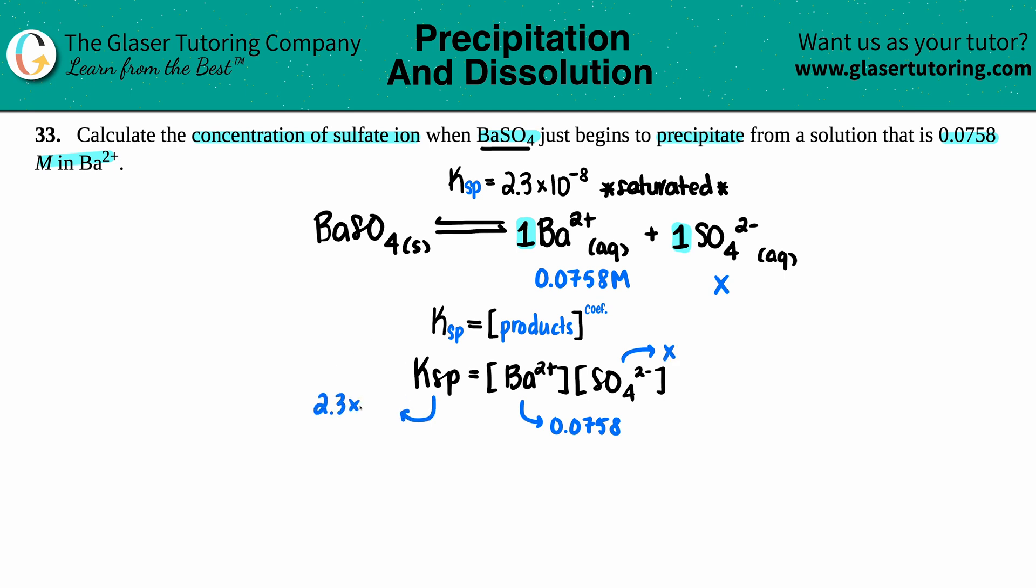Let's plug everything in. 2.3 times 10 to the negative 8th equals 0.0758 times x. To solve for x, we're just going to divide by 0.0758. That cancels out and now we have x equals some number.